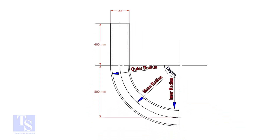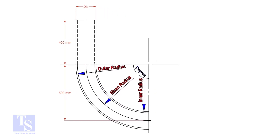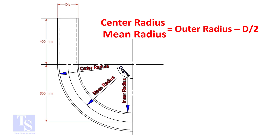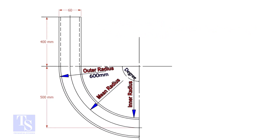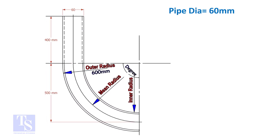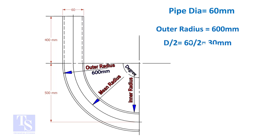In a drawing, usually the mean radius or the center radius is given. Suppose the outer radius is given — subtract the half diameter from the outer radius to get the center radius. Assume the diameter of the bend is 60 mm and the outer radius is 600 mm; then the mean radius is 600 minus half the diameter of the pipe, which equals 570 mm.